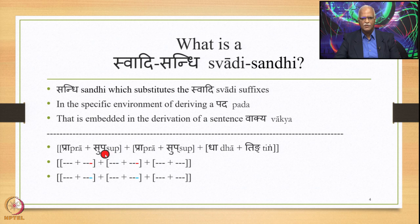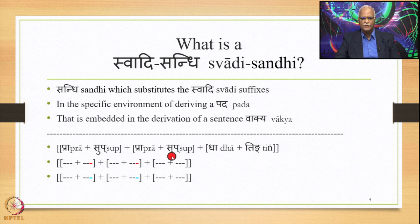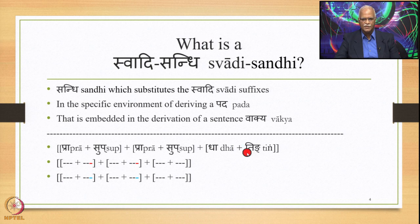As the definition of sentence goes, there should be at least one Ting, which is a Pratyaya attached to a particular type of Prakriti, namely Dhatu. So Dhatu plus Ting is one Pada. The remaining Padas contain Sup as the Pratyaya, whose Prakriti is a Pratipadika. So we have: Pratipadika plus Sup (first Pada), Pratipadika plus Sup (second Pada), and Dhatu plus Ting (third Pada), making one complete sentence.